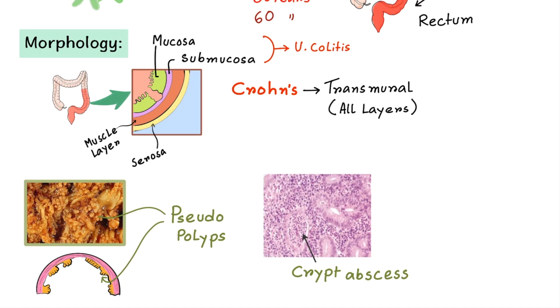One important point from an exam perspective is cryptapsis — it is one of the most characteristic features of ulcerative colitis.